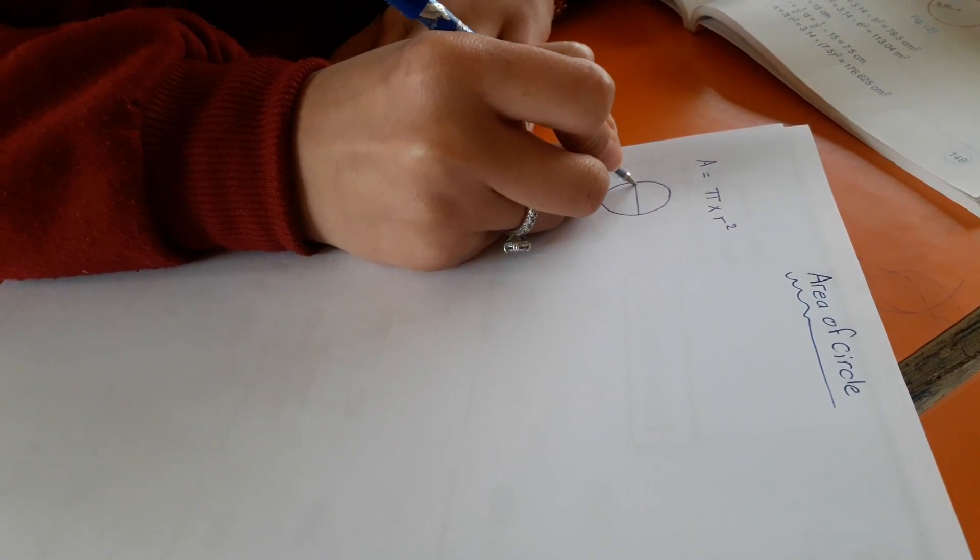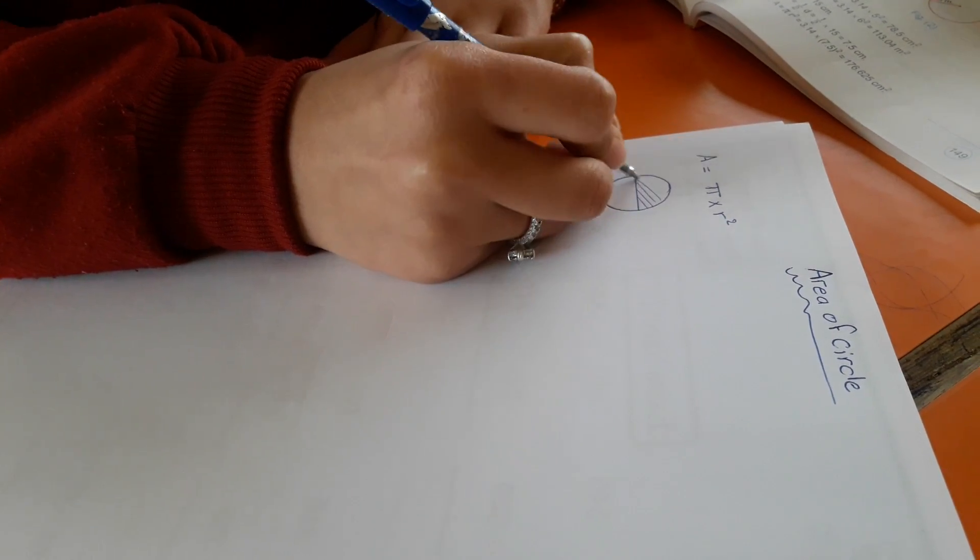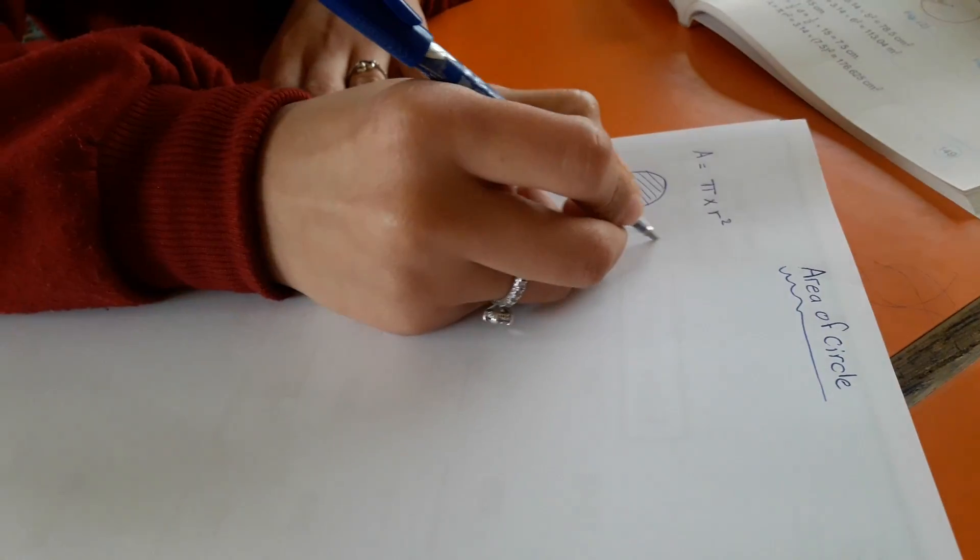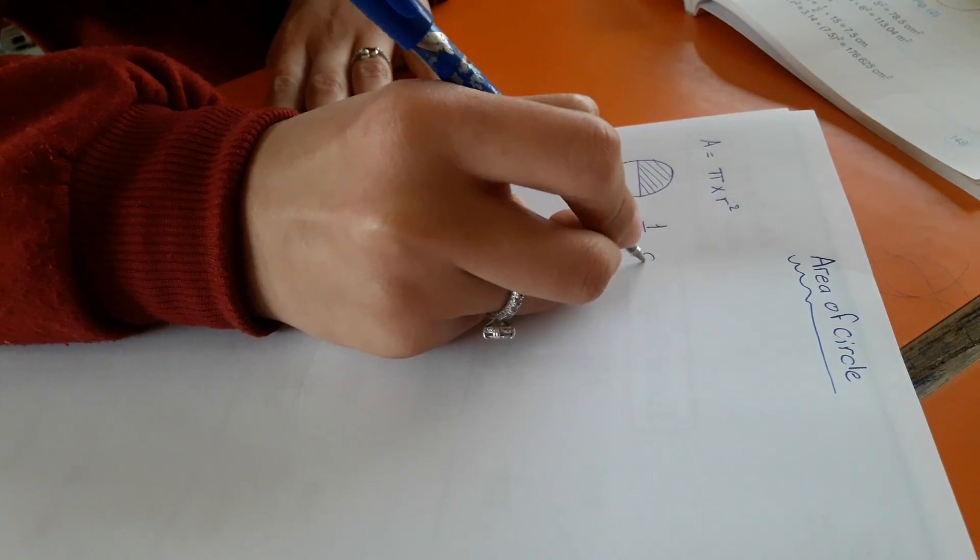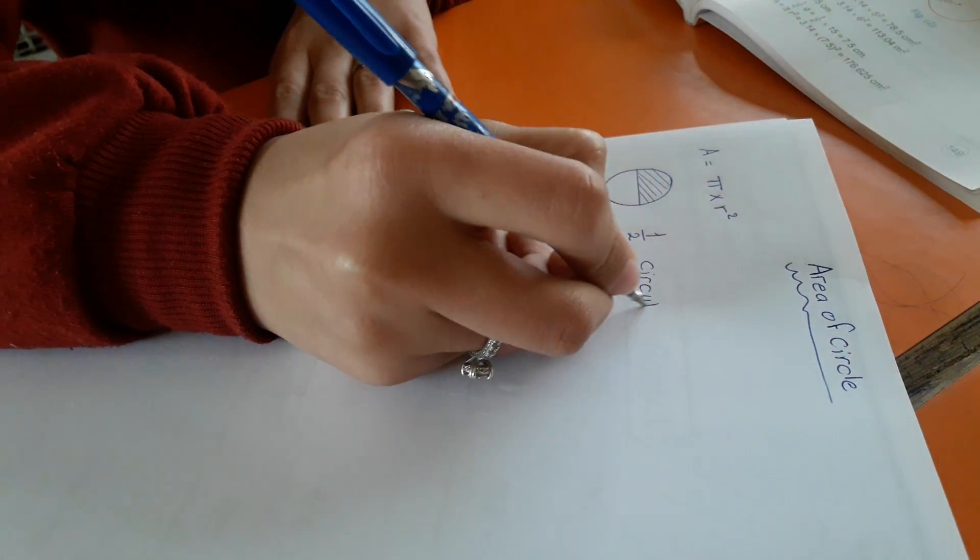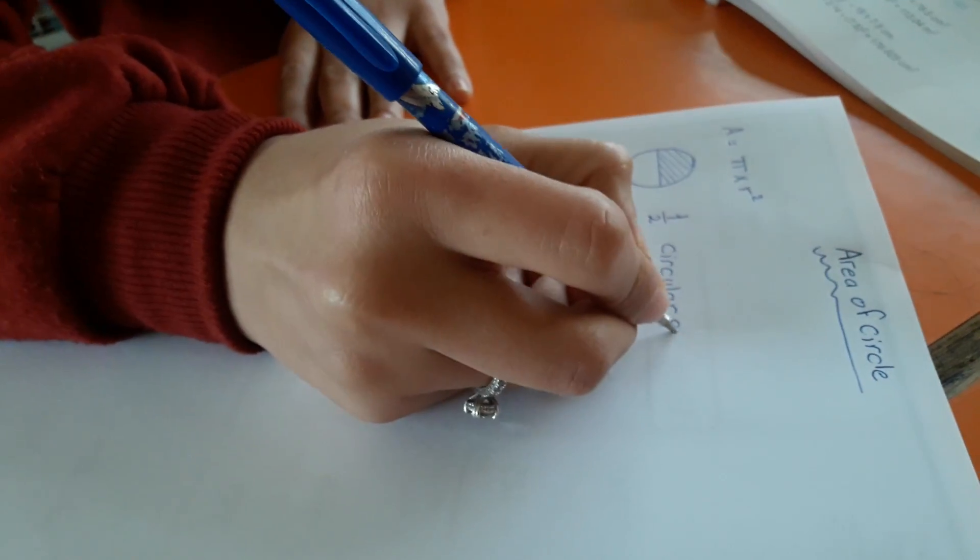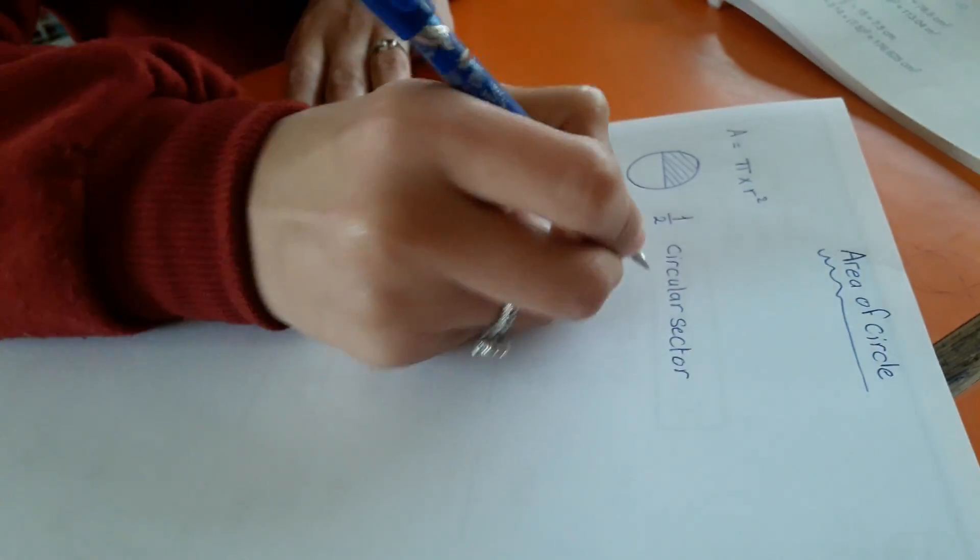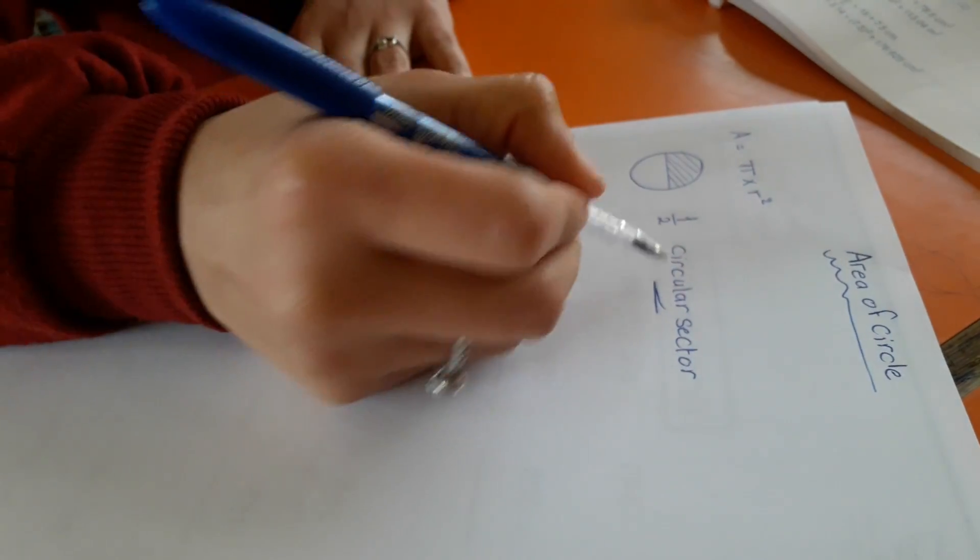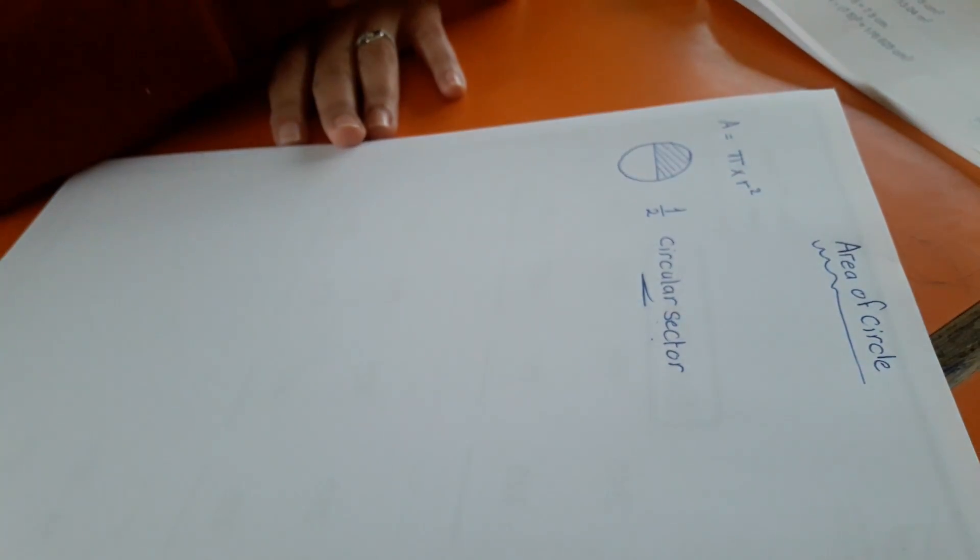Today we want to know what is this? The fraction like 1 over 2. This fraction is called circular sector. Today we want to know how to find the area of circular sector.